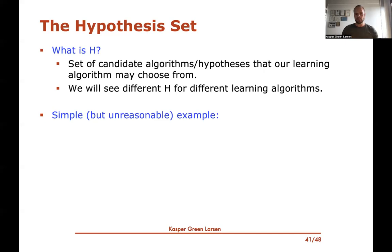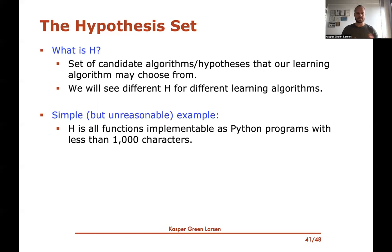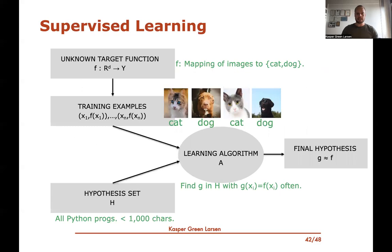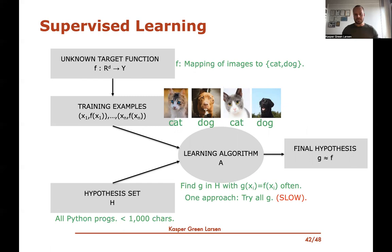Here's just a simple but completely crazy example that you would never use in practice: you could let the hypothesis set be all possible functions you could implement as a Python program using less than a thousand characters. That's a definition of a possible set of algorithms. The learning algorithm would then be looking for a Python program of at most a thousand characters that, if you run it on each of the training example feature vectors, often gives the correct label. What the learning algorithm could do here is try all possible Python programs of at most a thousand characters, look at which one does the best, and output that one. Of course this is going to be insanely slow and will never finish in time — but it is an example of a learning algorithm.